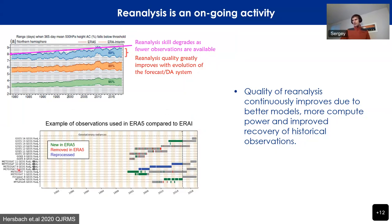Another aspect the community spends a lot of time on is the reprocessing of historical observations. Looking at just geostationary data from ERA5, a lot of data was added compared to ERA-Interim by recovering from archives. Some of the data was reprocessed, shown in blue, and some data was removed because it was deemed to be bad data.